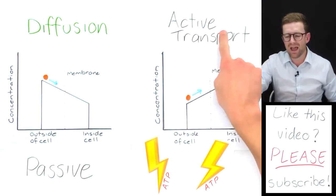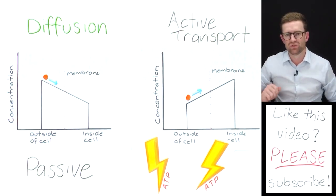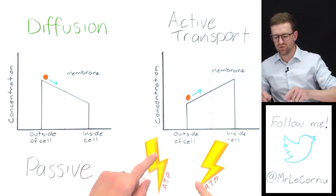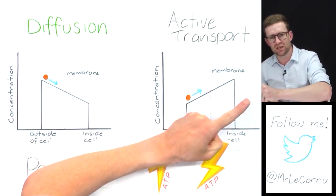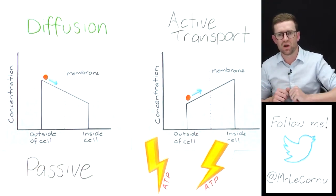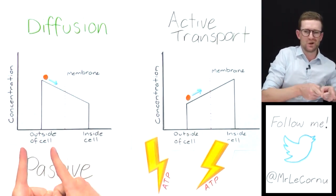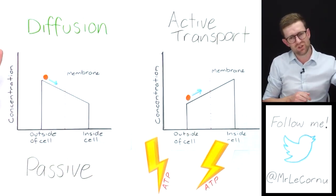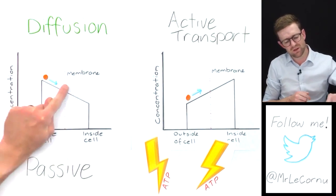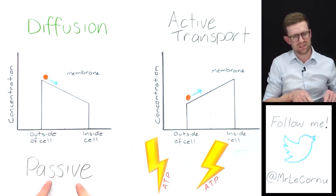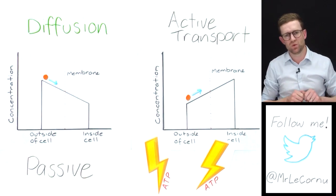It's also why active transport is called active - because it's a process that's moving something against a concentration gradient and requiring energy. That's why we think of it as being the opposite of diffusion, because diffusion is moving with a concentration gradient and it's passive, which means it doesn't require energy.